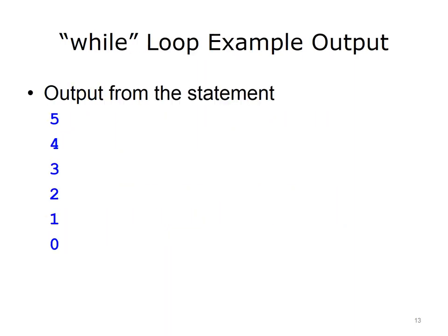Here is the output from the while loop on the previous slide. During each iteration of the loop, the value of COUNT is printed, and the value is decremented or reduced by 1. Eventually, the COUNT is less than 0, so the loop ends.